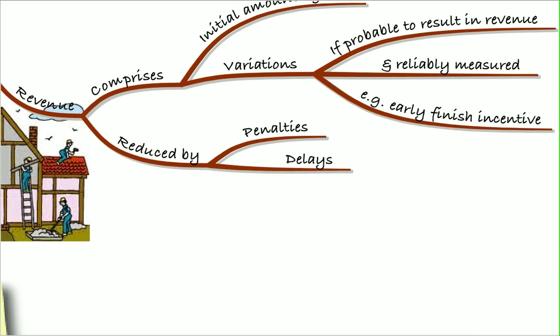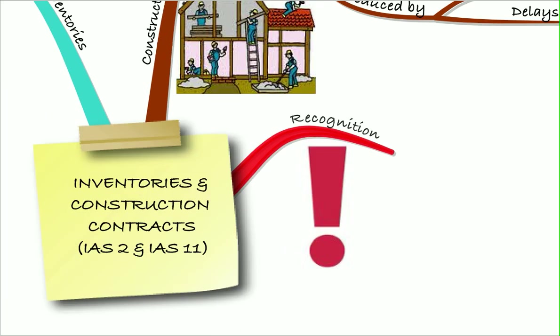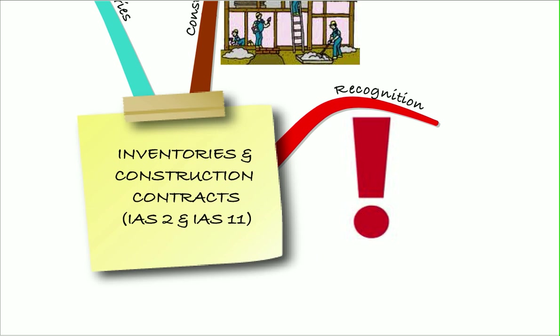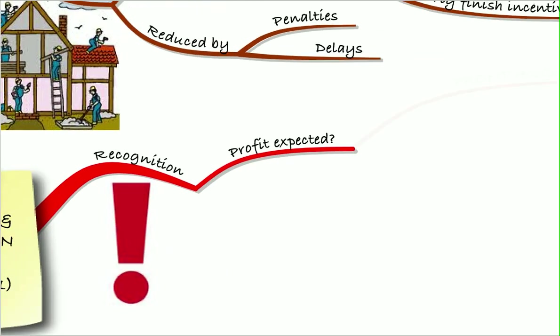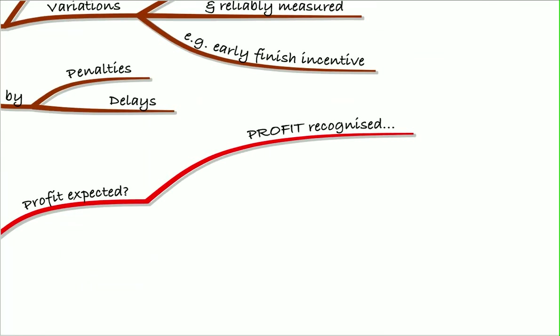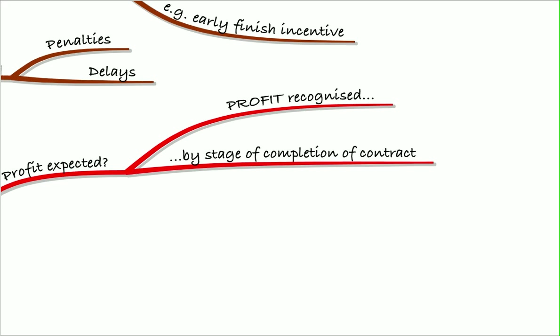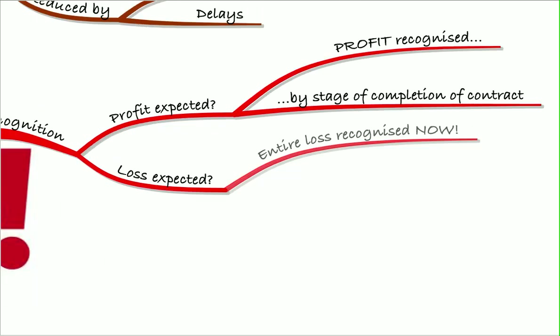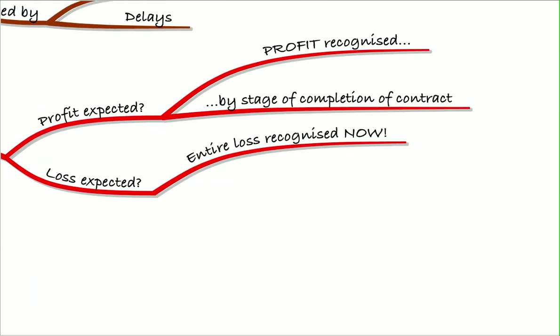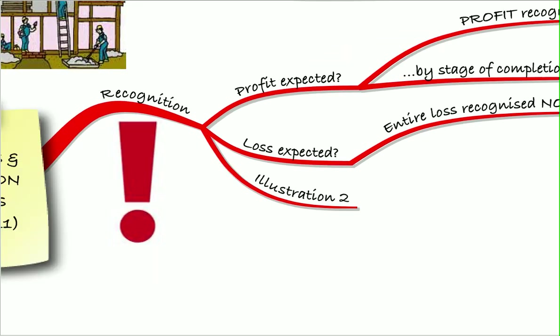So those are the costs and revenue we're going to recognize. How do we go about doing this? Well, what we need to do first of all is decide, are we going to make a profit or are we going to make a loss? If we're expecting to make a profit, we recognize that profit by the stage of completion of the contract. If we think we're going to make a loss, we do that all immediately. We recognize all of the expected loss immediately. So we looked at illustration two to see how to go about that.